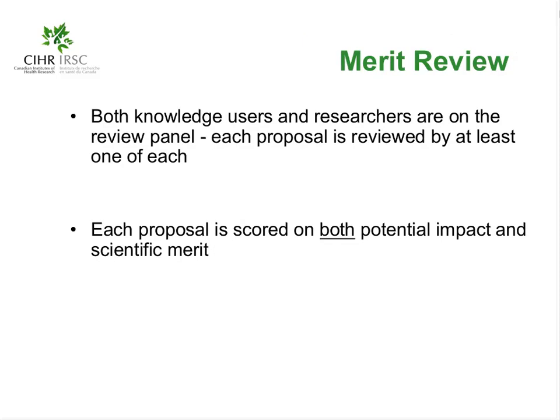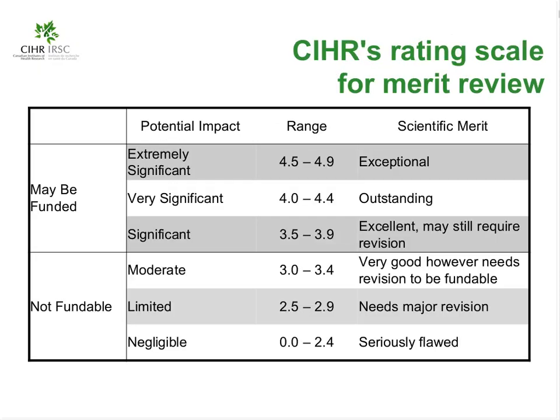All integrated knowledge translation applications at CIHR undergo a merit review. Merit review means that both knowledge users and researchers are on the review panel and that each proposal is reviewed by at least one of each. Each proposal is scored on both potential impact and scientific merit. Potential impact and scientific merit are each scored separately and weighted equally. The score for potential impact and scientific merit must each be 3.5 or above in order for the application to be eligible for funding, and the two scores are then averaged into a single score.